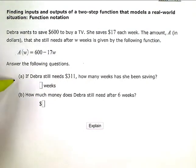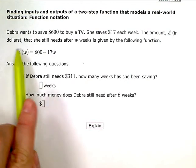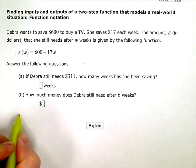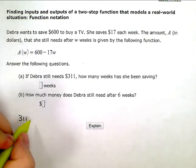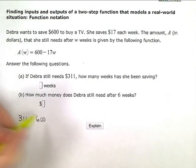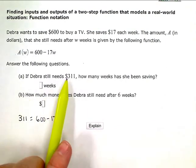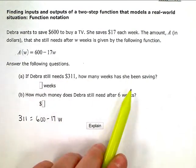So if Deborah still needs $311, how many weeks has she been saving? So this one is the output. She still needs $311, that's the amount. So I'm going to replace the A of w with the $311 equals $600 minus $17w. So they gave us the output, how much she has left to save. They're asking us to solve for how many weeks has she been saving, the input.